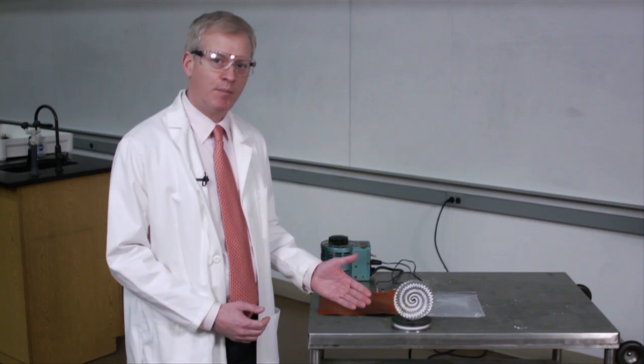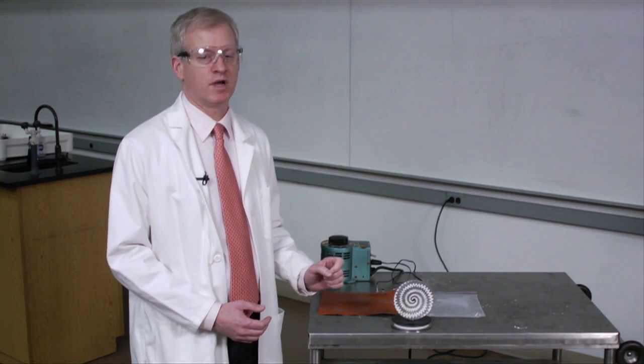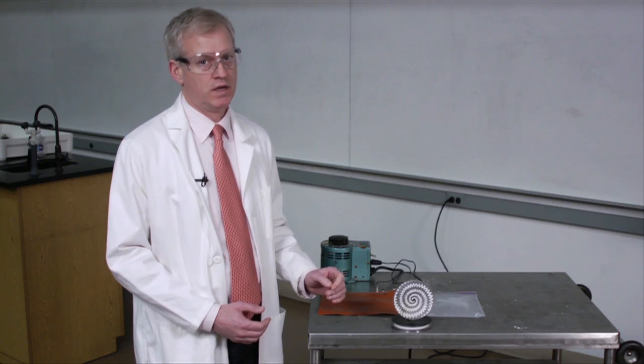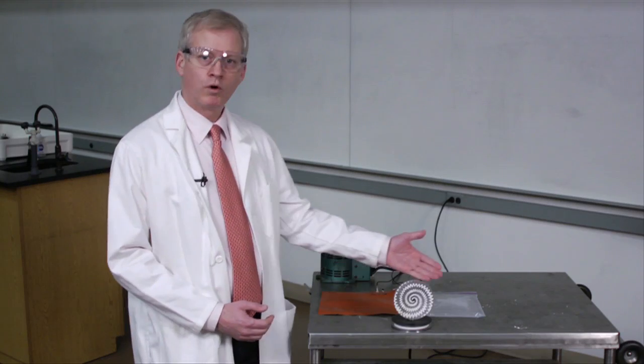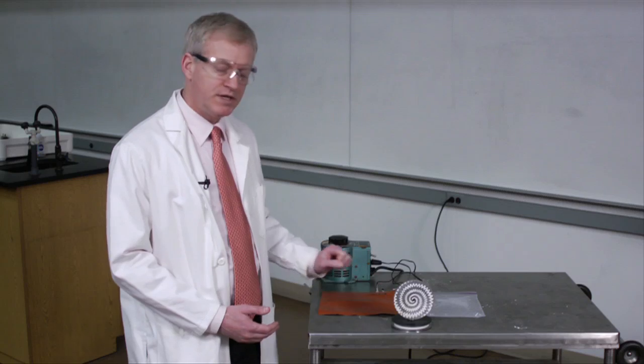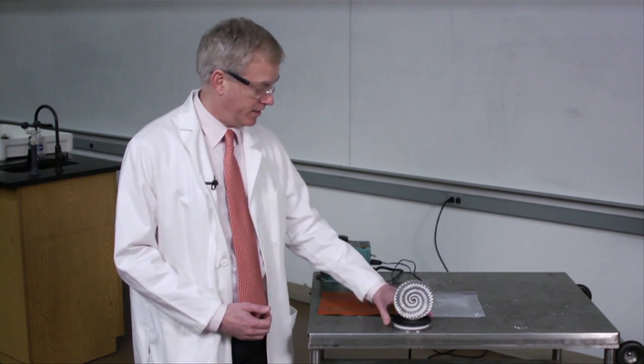In this case, we're going to put the Stirling engine on top of something that has a different temperature than the air in the room. It can either be hotter or colder. Let's start with hotter. I'll place the Stirling engine on this heat pad.